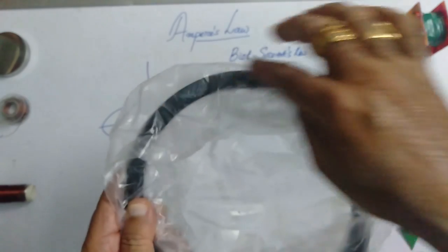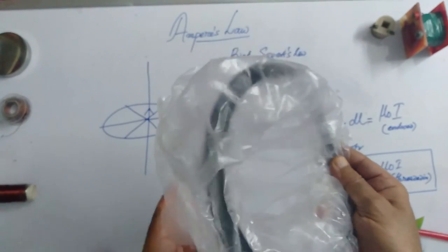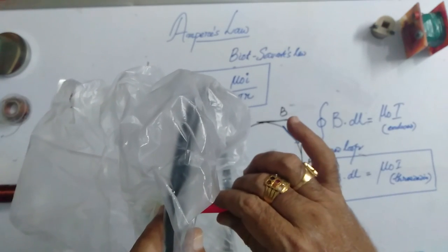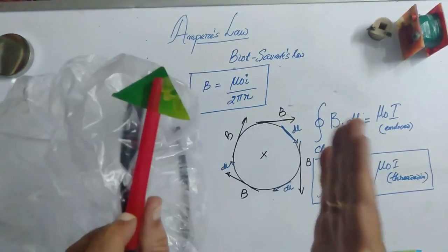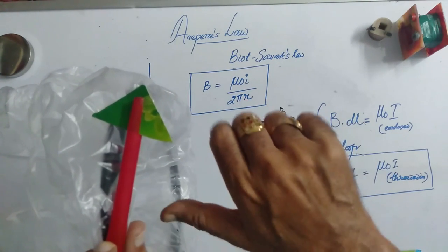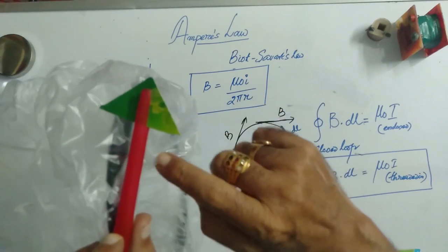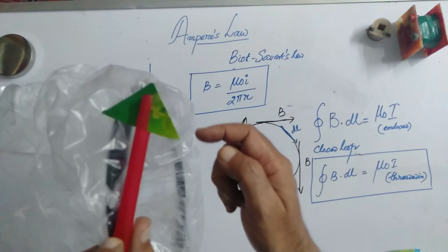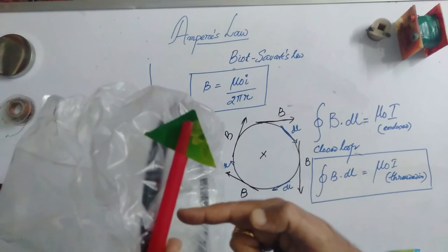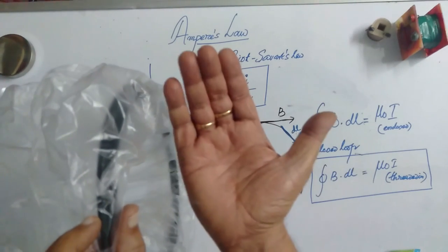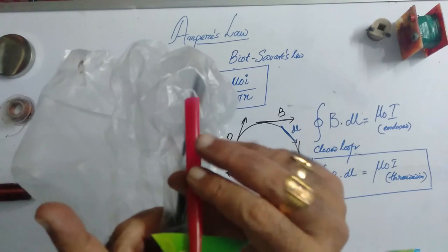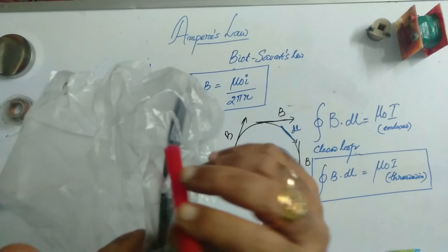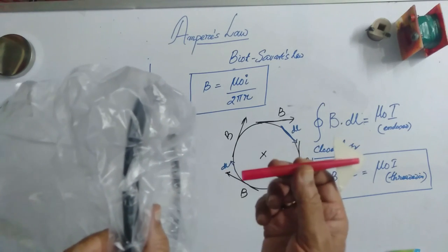This is the loop and this is the surface attached to it. If the current is going in, then the magnetic field will be in this direction. If the observer is on this side, it appears the current is going in, and if you go around in a clockwise direction, then Ampere's law tells us that I should be considered as positive. If you go in the opposite direction and the current is coming out, then the magnetic field will be in the counter-clockwise direction, and the current coming out is to be taken as positive.